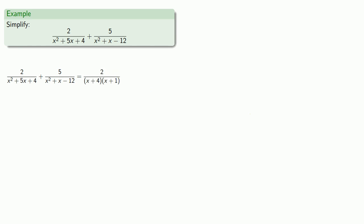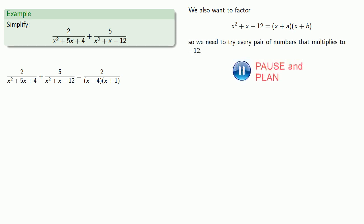We also want to factor x squared plus x minus 12. And again, we hope that it's equal to x plus a times x plus b, and so we need to try every pair of numbers that multiplies to minus 12. So 1 and negative 12 multiply to minus 12. But before we sign the contract that says x squared plus x minus 12 is really equal to x plus 1 times x minus 12, we should check it out.